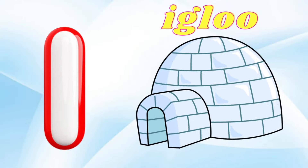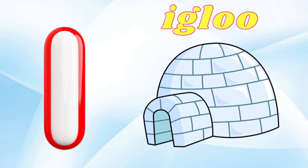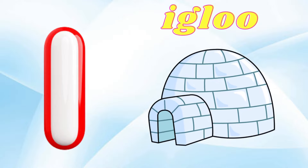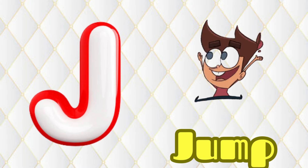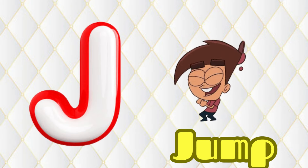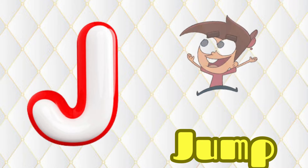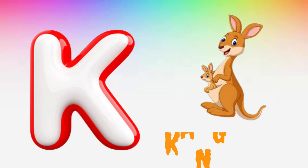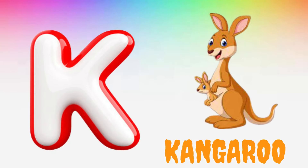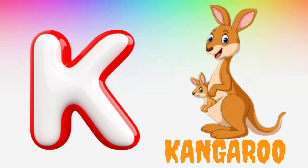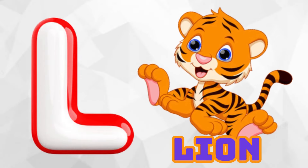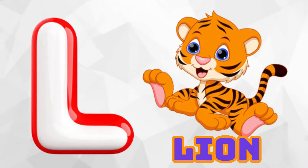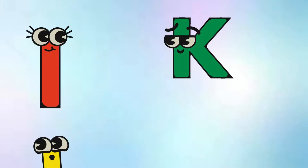I is for Igloo, I-I-Igloo. J is for Jump, J-J-Jump. K is for Kangaroo, K-K-Kangaroo. L is for Lion, L-L-Lion.